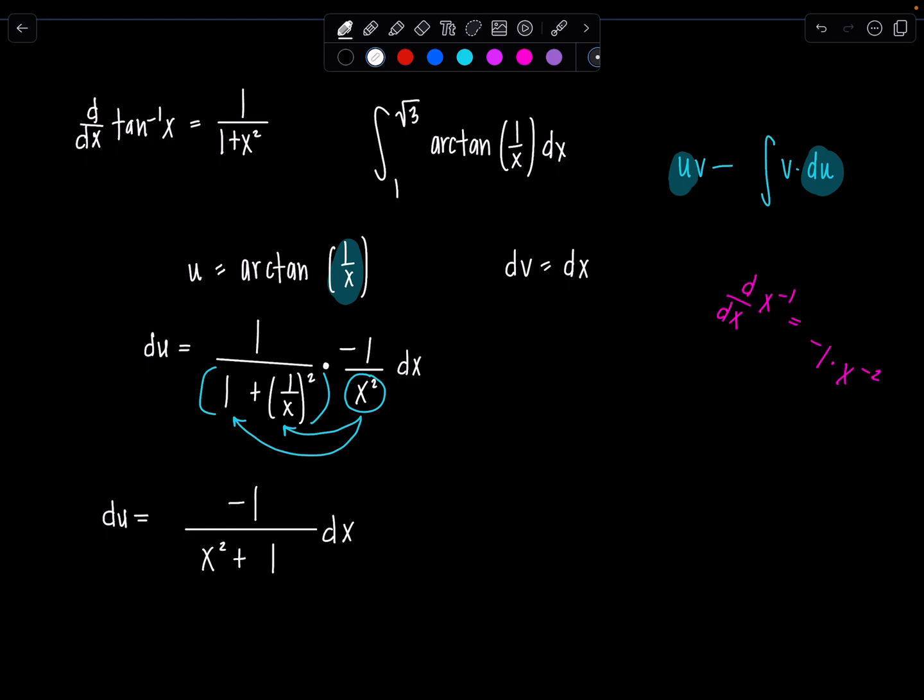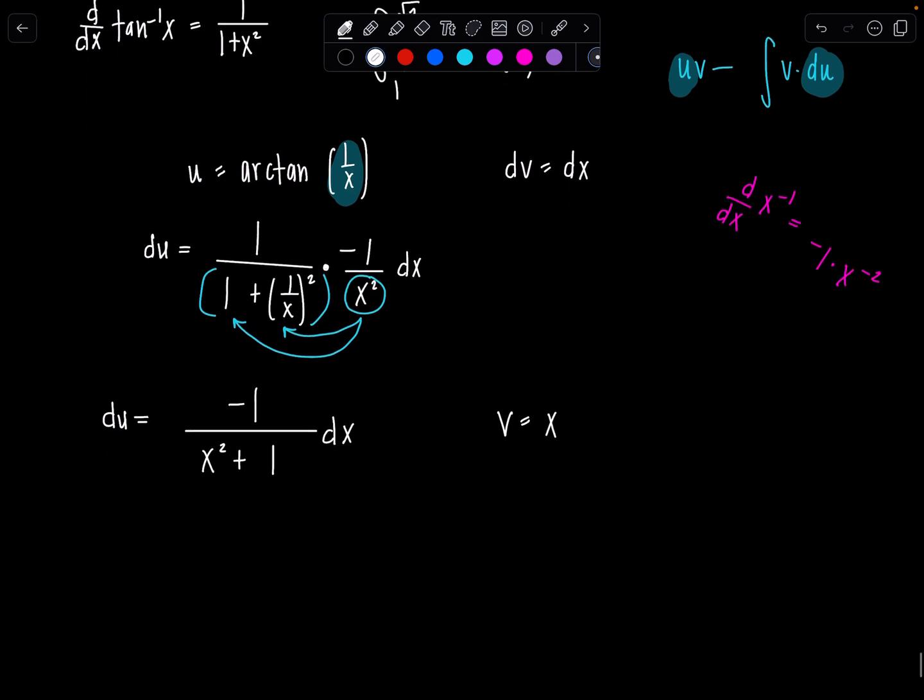It's good, right? And then if dv is dx, then v is just x. That was probably the most relaxing part of the problem so far.